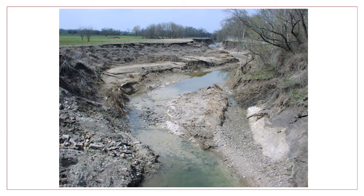When rivers are experiencing large changes or disturbances, such as from urbanization or development in the watershed, erosion can be severe. Extreme or recurring erosion is usually a sign that the river system is under stress.